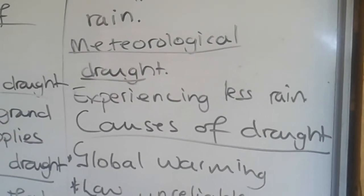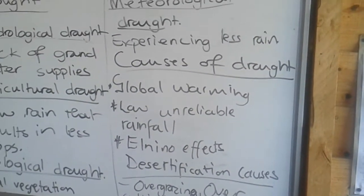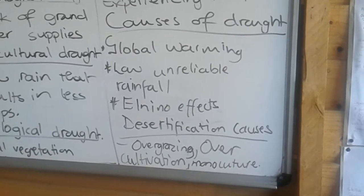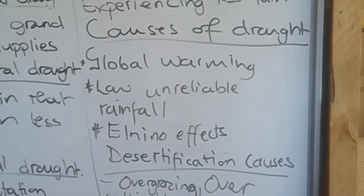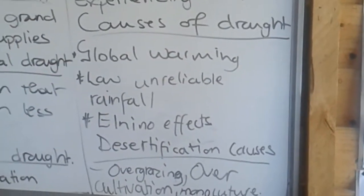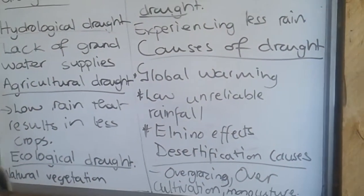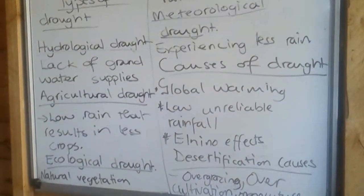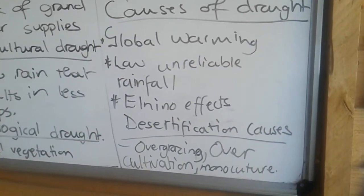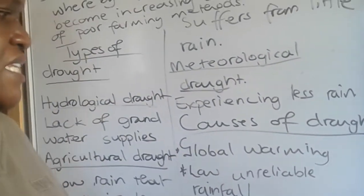Low, unreliable rainfall is a result of global warming. Remember, global warming is the increase of surface temperatures as a result of gases like carbon dioxide that trap heat into the atmosphere. This increase in temperatures can disrupt weather patterns — we can experience drier conditions resulting in drought, or wetter environments like floods. El Niño effects can also bring drier spells into Africa, resulting in less rainfall.